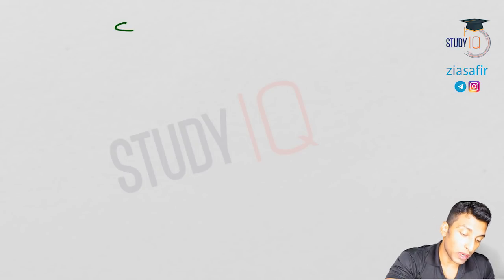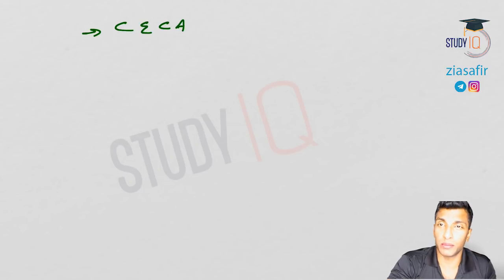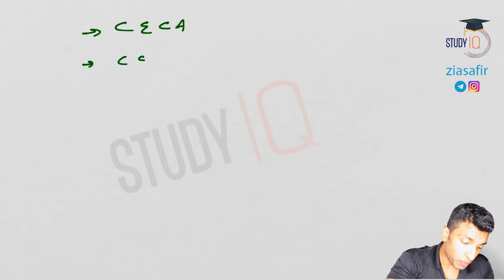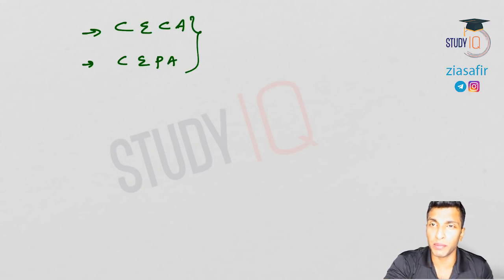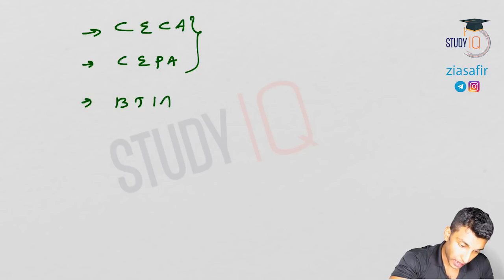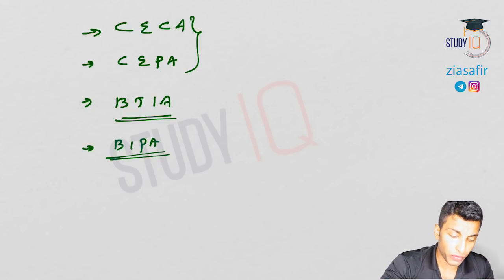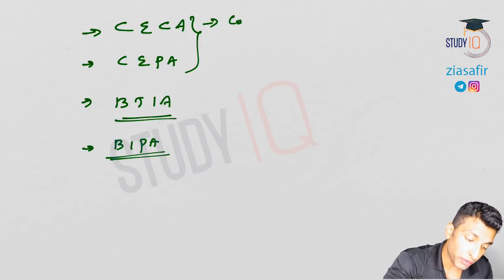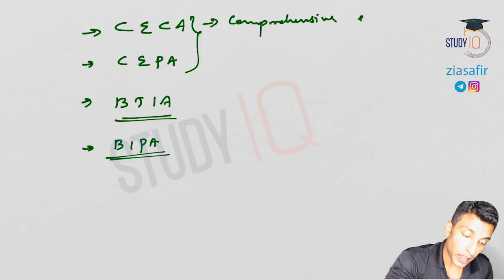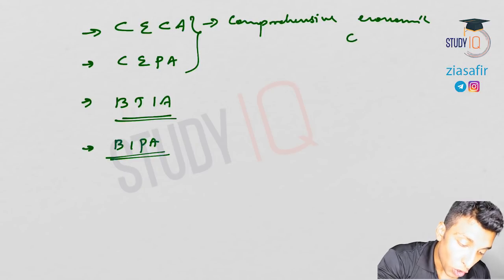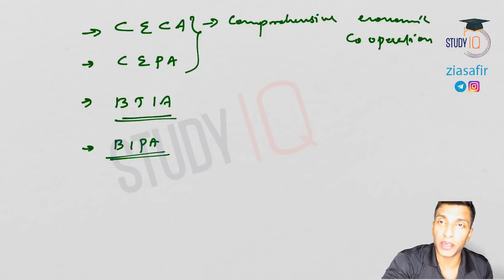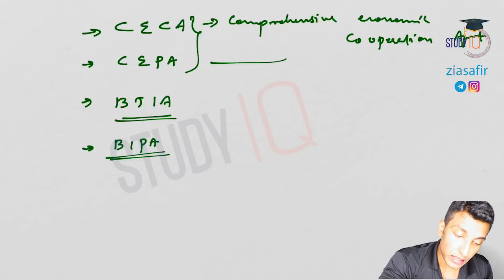Welcome to Study IQ. We will continue our discussion on economy, covering the Comprehensive Economic Cooperation Agreement (CECA) and the Comprehensive Economic Partnership Agreement (CEPA). There is not much difference between these two. We will also see BTIA — Bilateral Trade and Investment Agreement, which we have signed with the European Union — and BIPA — Bilateral Investment Promotion and Protection Agreement, which we have signed with the Netherlands.